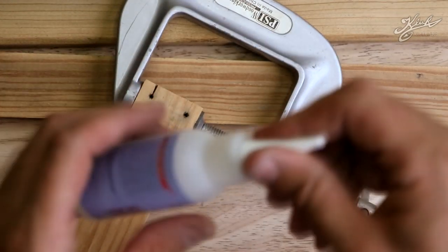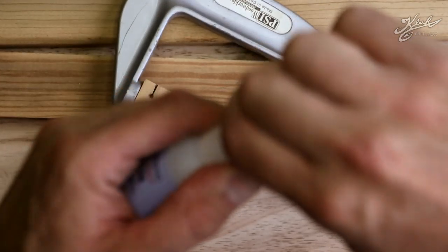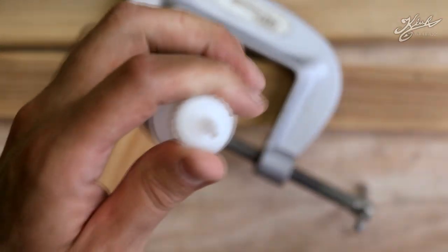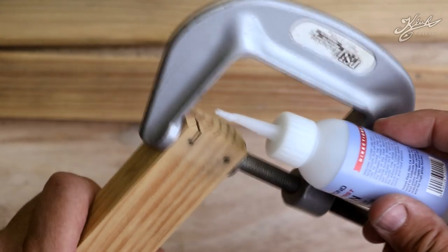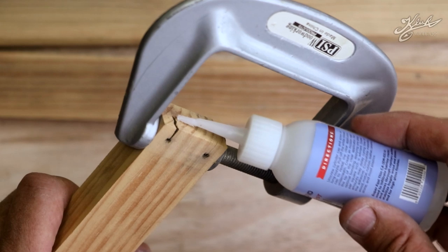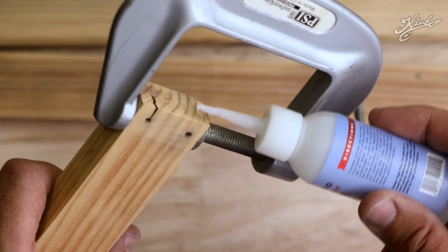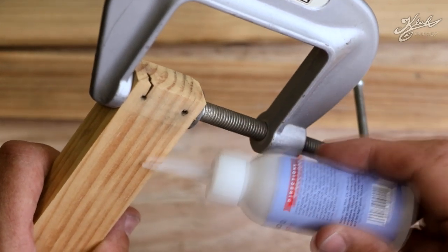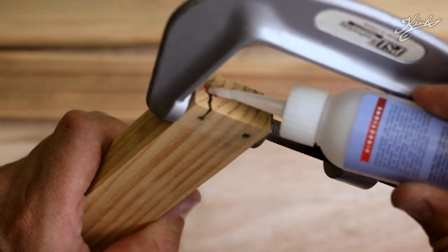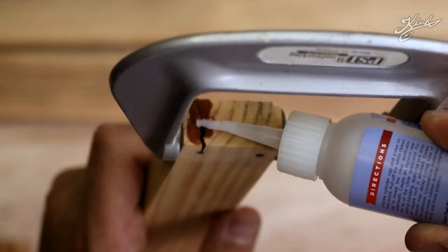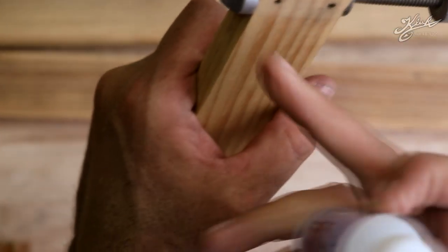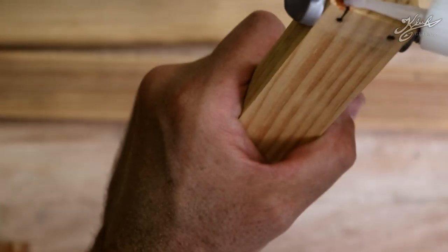We're gonna take some cyanoacrylate or super glue. This is a super thin kind. The reason we're using super thin is because when you put this, especially in end grain or in cracks, it's gonna actually wick right into the crack and repair it. So we're just gonna go ahead and add some super glue, and you might be able to see it following this crack down.